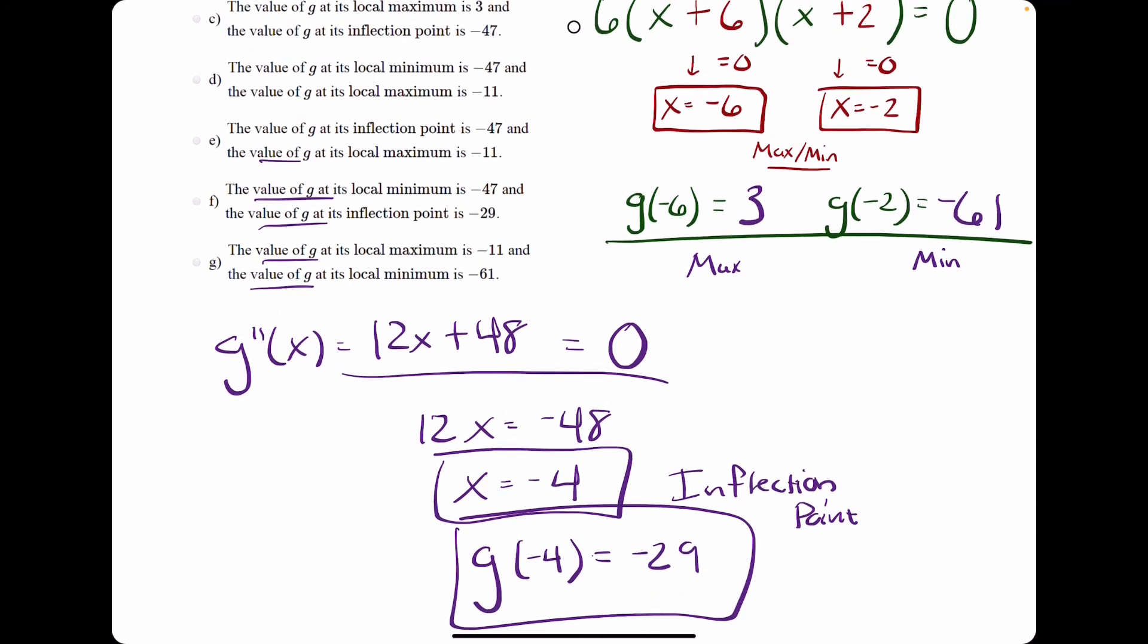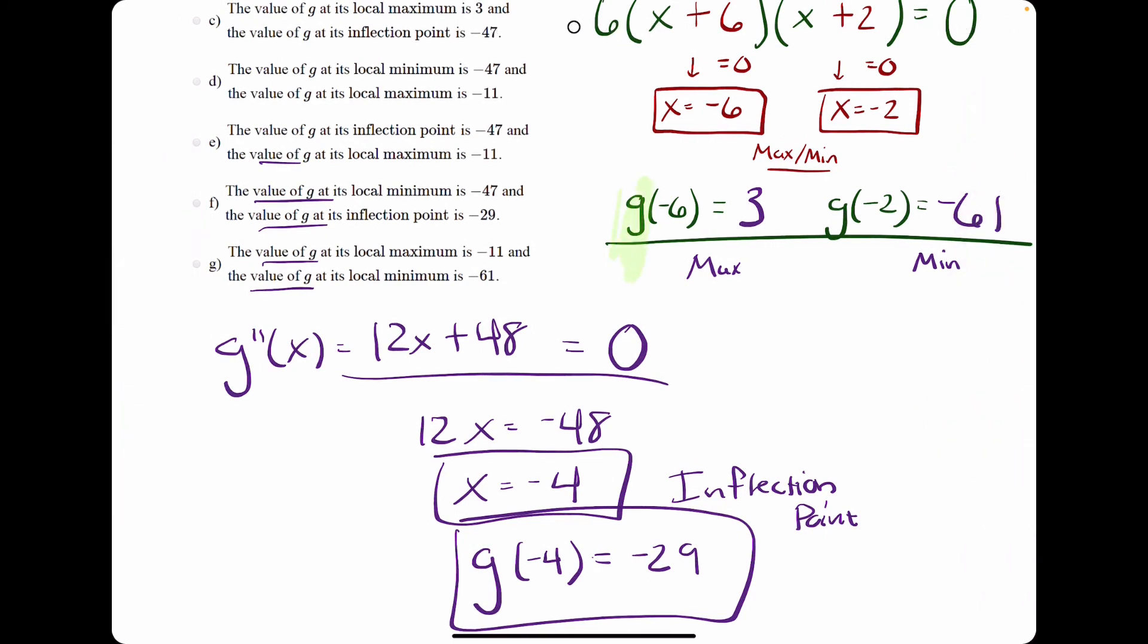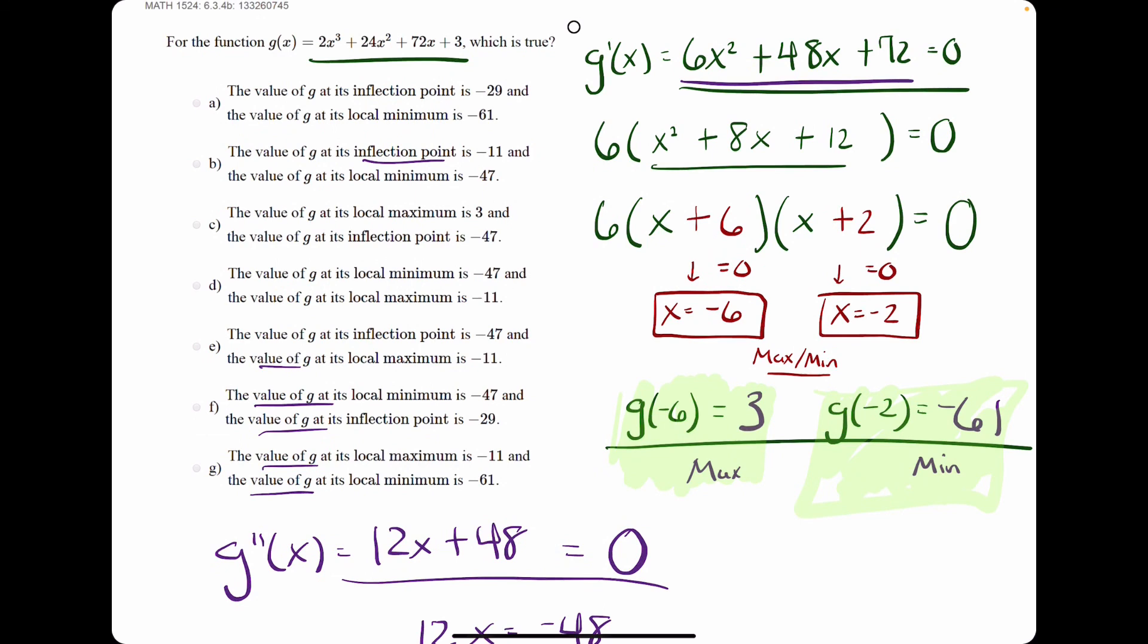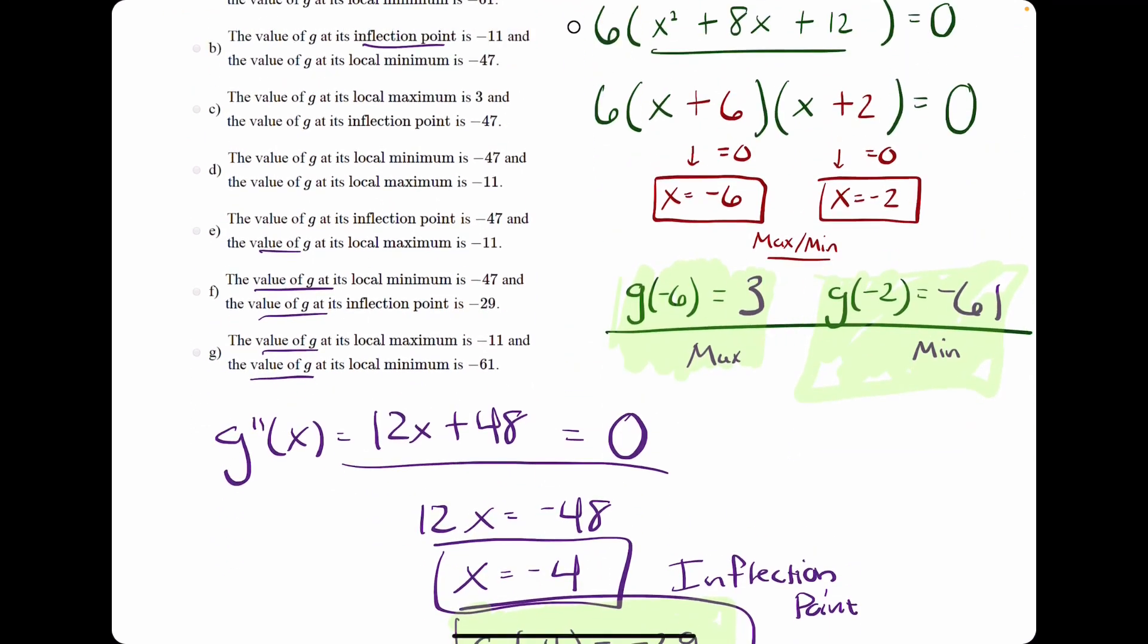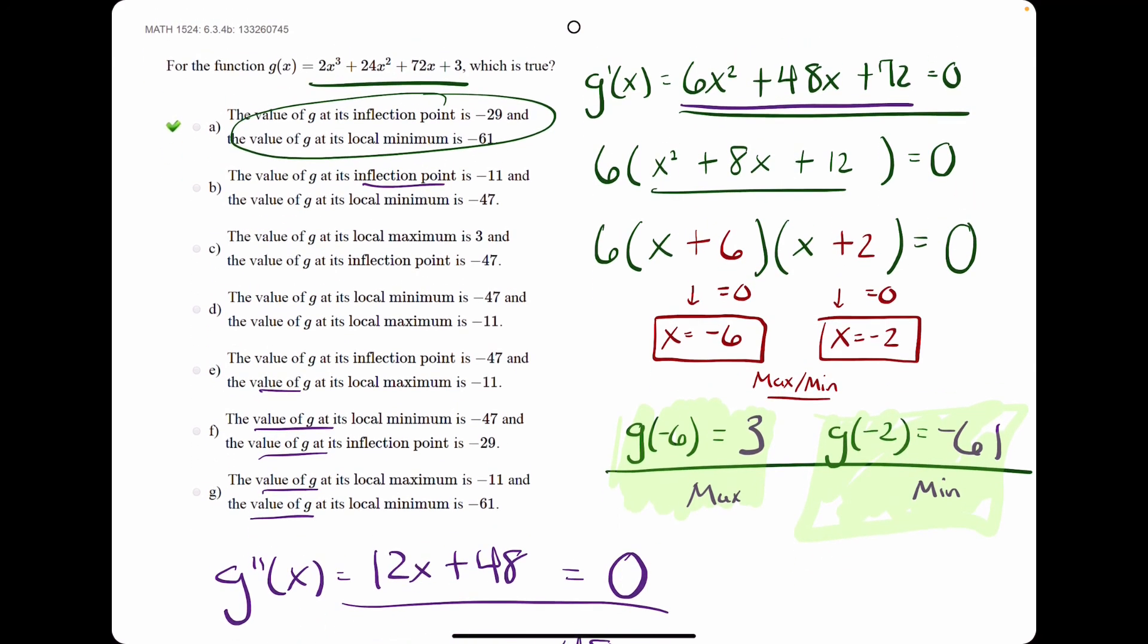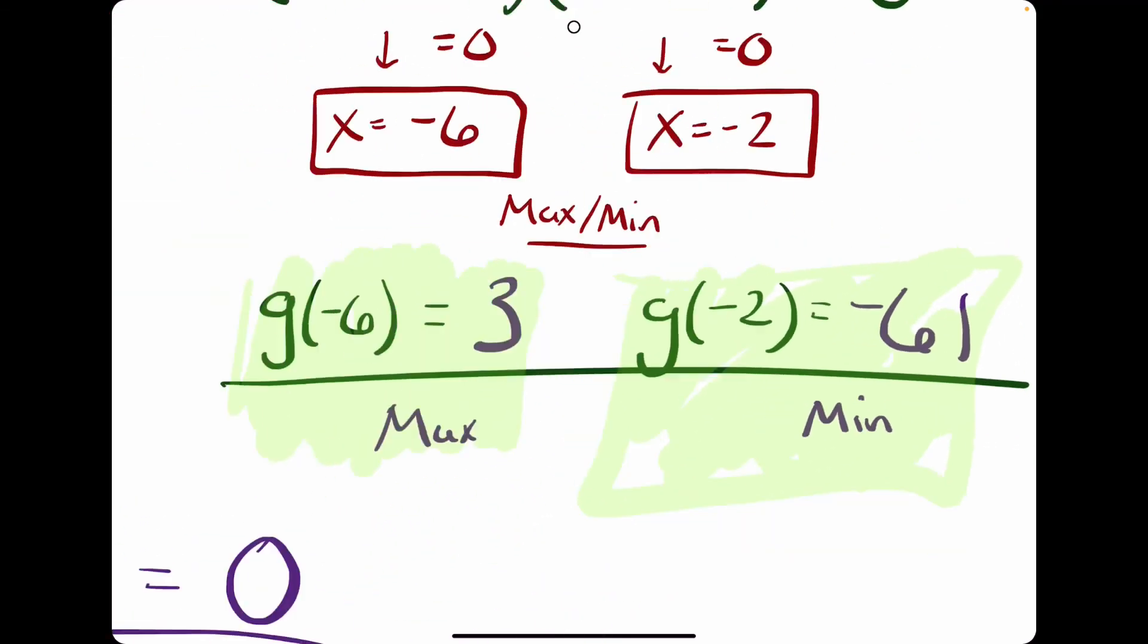We're looking for an answer that has two of these three options: either a max at 3, a min at negative 61, or an inflection point with a g value of negative 29. We want to see the answer that has two of these three values in it. It appears that option A is our answer. It has the inflection point at negative 29 and local min at negative 61.